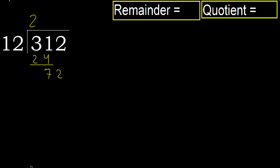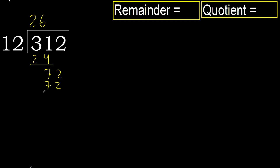Next, bring down: 72. 12 multiply by 7 is greater, so multiply by 6. 72 is not greater, ok. Subtract 0. Next, there is no number, therefore finish it.